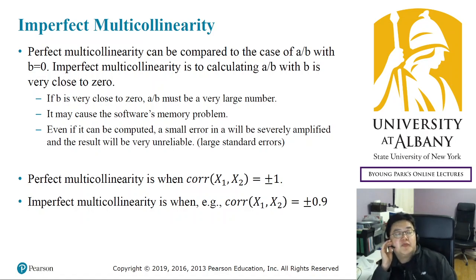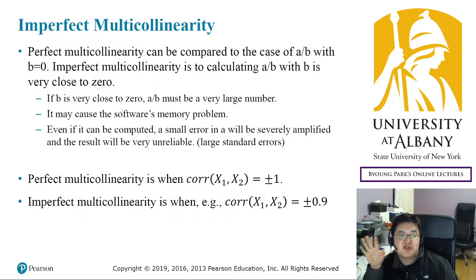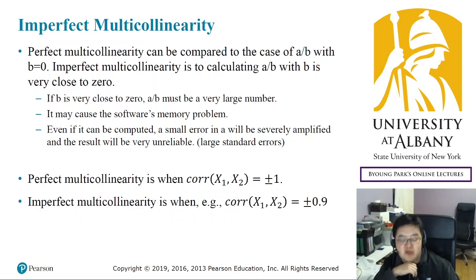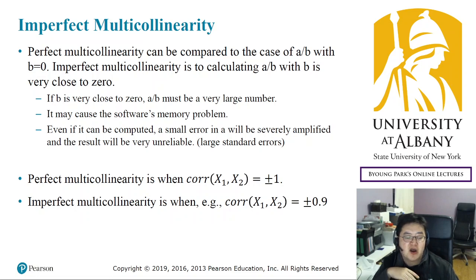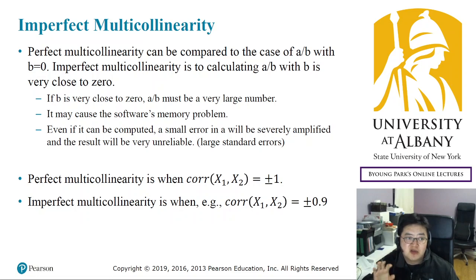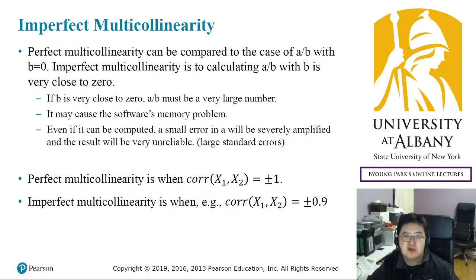Hey, this is the final part of the multicollinearity chapter. So far, we have considered perfect multicollinearity, where there is a perfect linear relationship. However, in practice, even imperfect multicollinearity could be a problem.